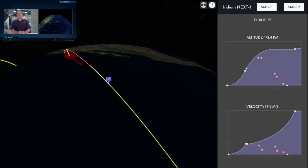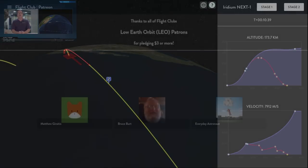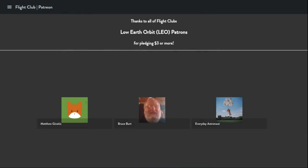So with that, Falcon 9 first stage is back on the drone ship. We had a great ride there. Second stage, a great ride into the parking orbit with 10 Iridium satellites on top. And now we're waiting to see as we go through the rest of the morning here at SpaceX headquarters in Hawthorne, California.